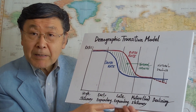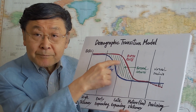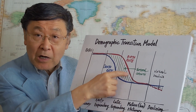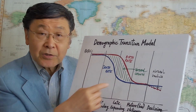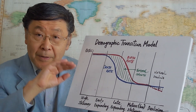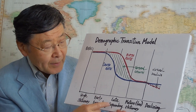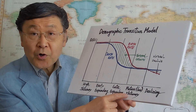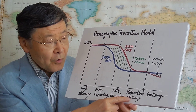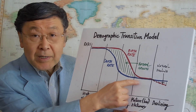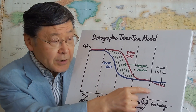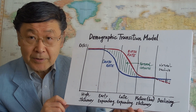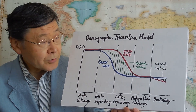Then the late expanding period begins when the birth rate starts to fall along with the death rate. This difference becomes narrower and narrower, meaning the natural population growth rate is going down and population increase gradually decelerates. In the fourth stage, called the mature or low stationary period, both birth and death rates stay low, canceling each other with no population growth. Many advanced countries are in this period with very low population increase.